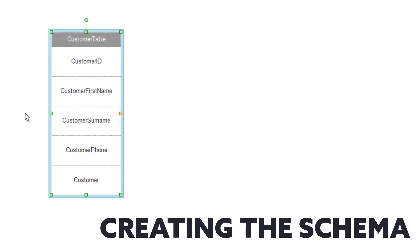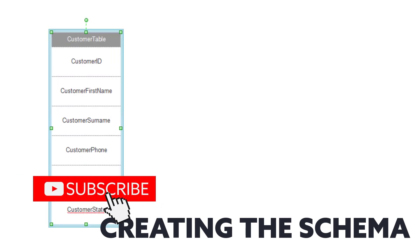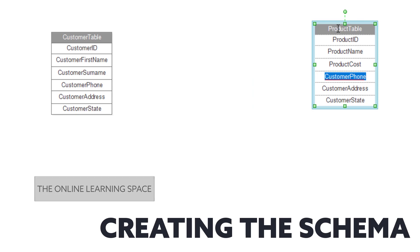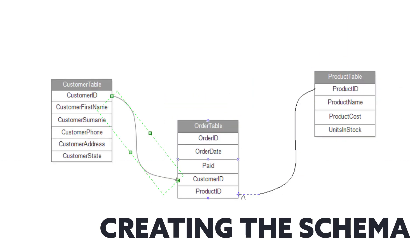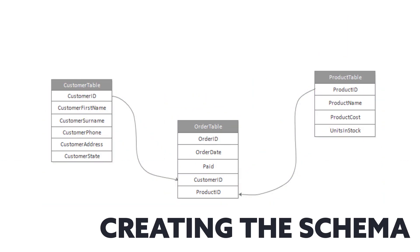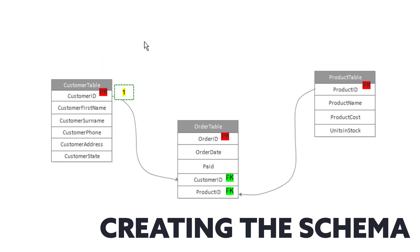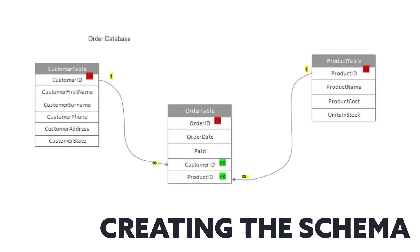A schema is just a visual representation of your database. In this simple example we have three tables: a customer table which contains information about each customer, a product table which contains information about every product, and a linking table — the order table — which connects the customer table and the product table together.